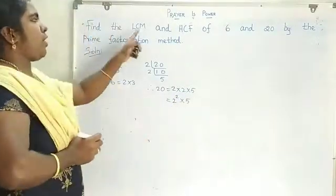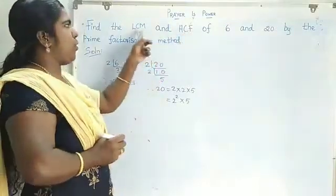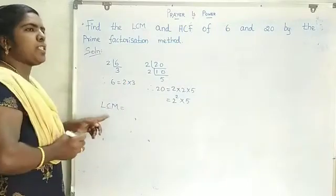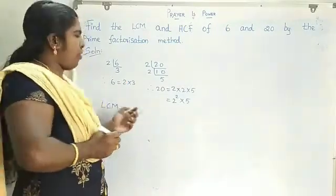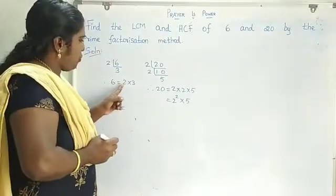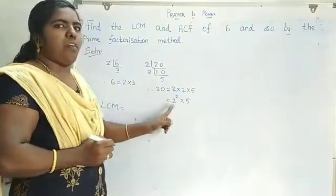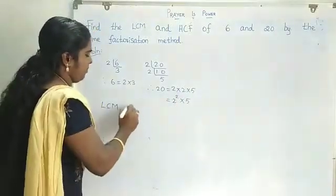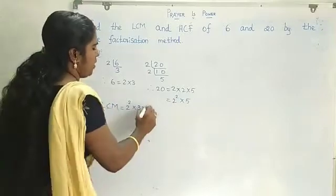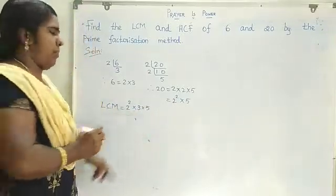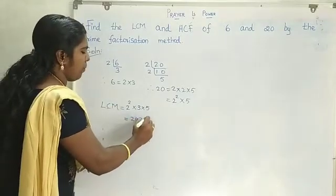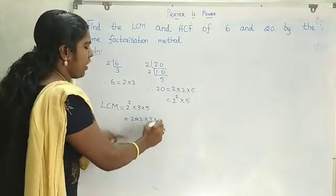We want to find out the LCM and HCF. First, we are going to find out LCM. LCM is the product of greatest power. Here we have 2 and 2 squared. So the greatest power is 2 squared into 3 into 5. This is the product of greatest power, which equals 2 into 2 into 3 into 5.